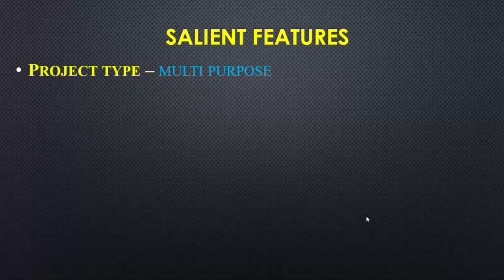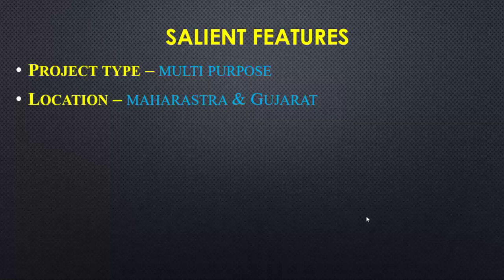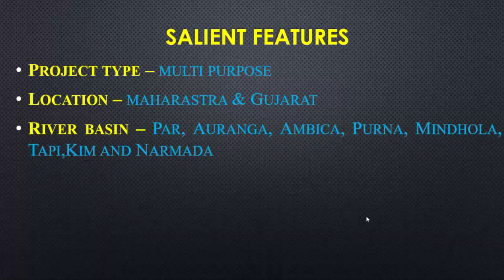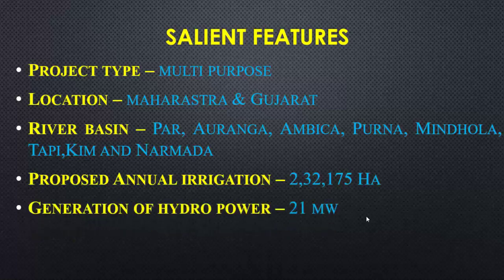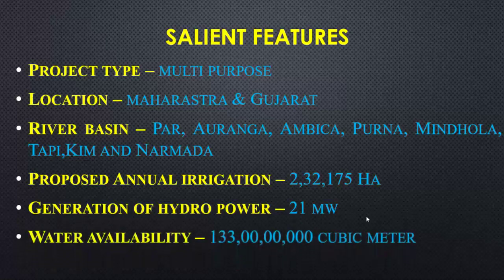Let's talk about the salient features of the project. This is a multi-purpose project, as there is consideration of more than one purpose — not only diverting water, but also providing irrigation facilities to deficit areas and hydropower generation. The project location is situated in Maharashtra as well as Gujarat state. Eight different river basins will be part of this project: Par, Auranga, Ambika, Purna, Mindola, Tapi, Kim, and Narmada. Proposed annual irrigation as per the project report submitted by NWDA is 2,32,175 hectares, with generation of 21 MW of hydropower and water availability of 133 crore cubic meters.